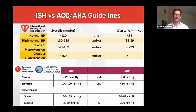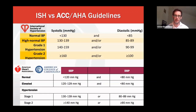As shown on this slide with blood pressure values illustrated, the normal blood pressure in the International Society of Hypertension guidelines is defined as a systolic blood pressure lower than 130 mmHg and a diastolic pressure below 85 mmHg. These values are higher than the normal values used in the AHA-ACC guidelines. Instead of using the term 'elevated' as in the AHA-ACC guidelines, the ISH guidelines use the term 'high normal blood pressure,' defined as a systolic blood pressure between 130 and 139 mmHg and/or a diastolic blood pressure of 85 to 89 mmHg.